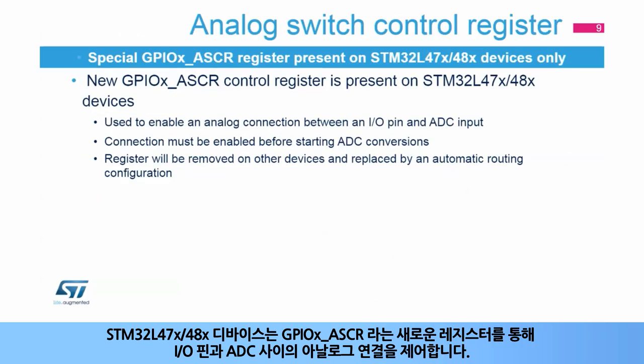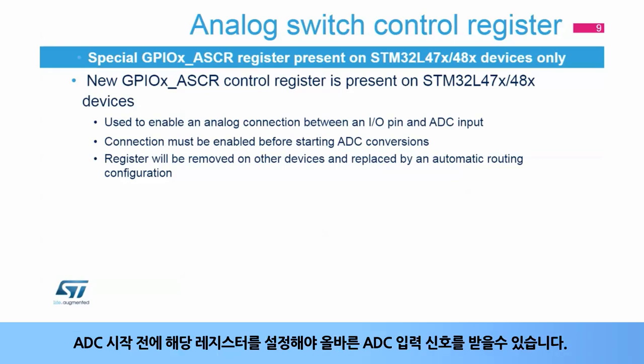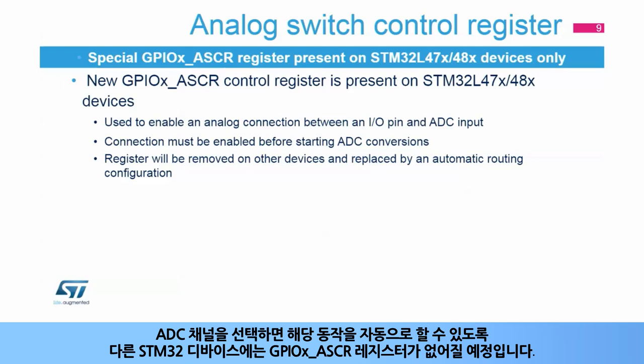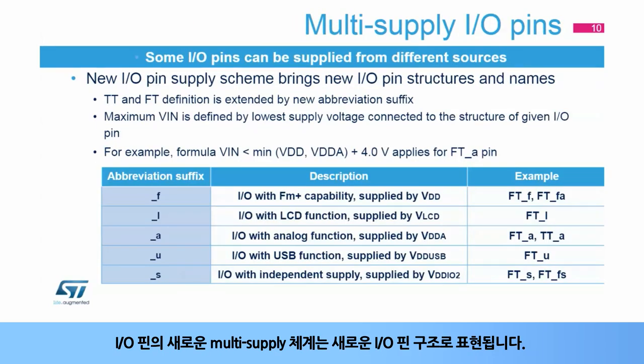The new GPIOX ASCR control register has been introduced on STM32L47X/48X devices to control analog interconnection between an I/O pin and ADC input. This register has to be configured before the ADC conversions are started to correctly bring the signal to the ADC input. This register is removed on other categories of STM32L4 devices, and the analog interconnection will be enabled automatically when an ADC channel is selected. A new multi-supply scheme of I/O pins brings new I/O pin structures.